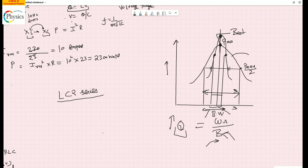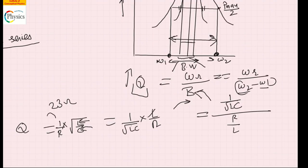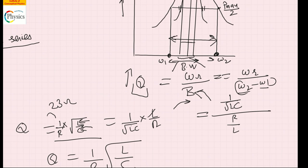Selectivity refers to the capability of the LCR circuit to select a certain set of frequencies within the cutoff. Narrower bandwidth means higher quality factor and a sharper graph — the circuit accepts only a very narrow range. The bandwidth equals omega-2 minus omega-1, which simplifies to R divided by L. The quality factor is given by one divided by R times the square root of L divided by C. All three values are known from the question.